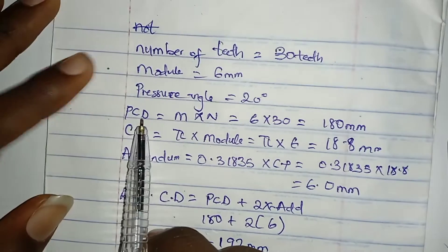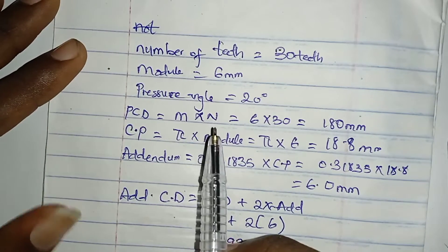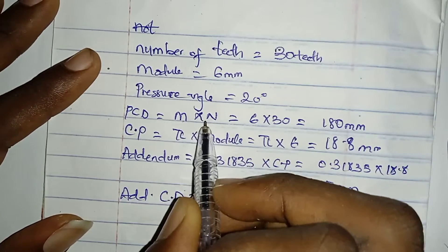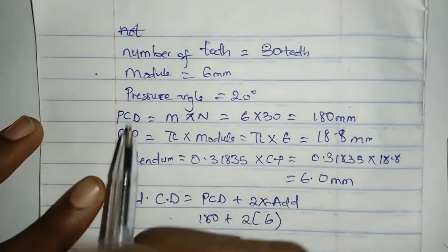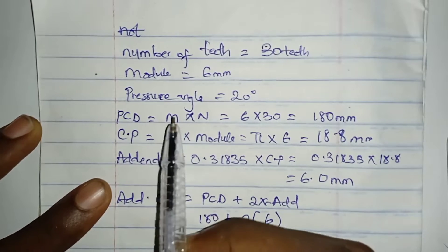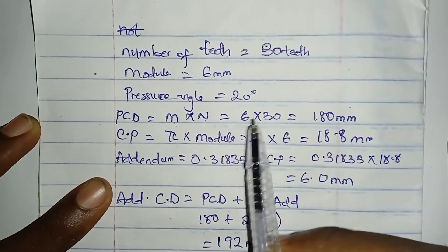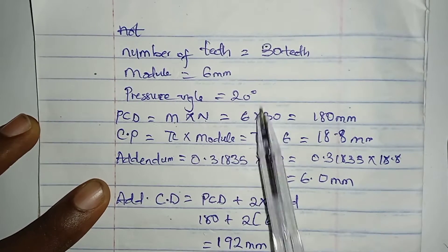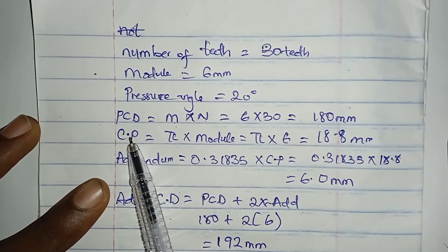The first thing we will need is our pitch circle diameter. The formula for pitch circle diameter is module times number of teeth. So our pitch circle diameter equals module times number of teeth, which is 6 times 30, giving us 180 millimeters.